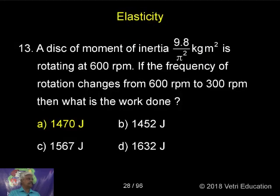A disc of moment of inertia 9.8/π kg·m² is rotating at 600 RPM. RPM means revolutions per minute. This RPM is very important for motorcycles, cars, and all vehicles which are in motion.